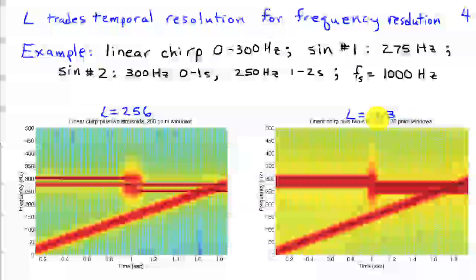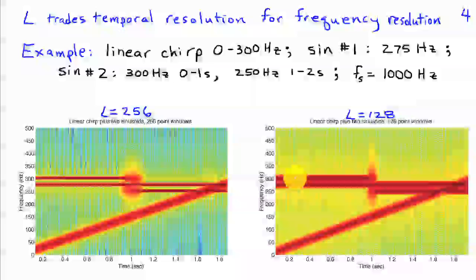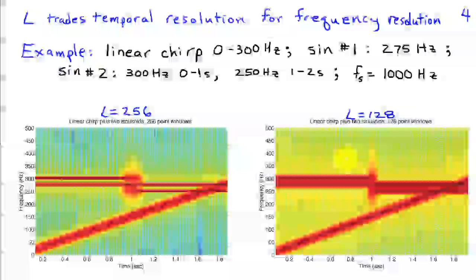If we decrease the length of the window to 128 points, what happens is our ability to resolve frequencies degrades. Along the vertical axis we see less resolution. It's almost difficult to tell that there's two sinusoids at 300 and 275, and then later at 275 and 250. But the temporal resolution is improved by almost a factor of two because we can see that this transition region where we've jumped from 300 hertz to 250 hertz, we can identify the transition time onset much more precisely.